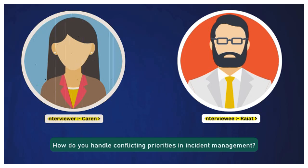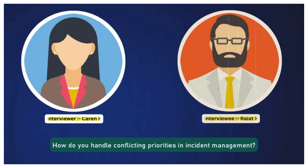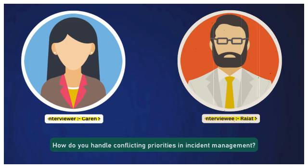How do you handle conflicting priorities in incident management? In real time we face various situations with conflicting priorities. When faced with multiple incidents of the same priority, I first assess the business impact and urgency for each incident. Based on that analysis, I allocate resources accordingly, ensuring that critical services are restored first while the rest are also being taken care of.